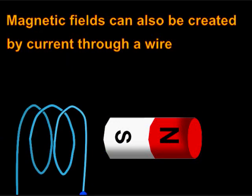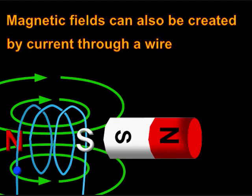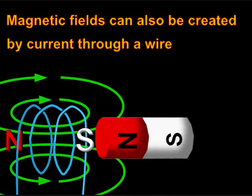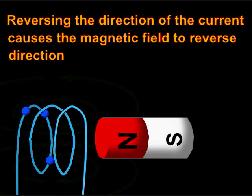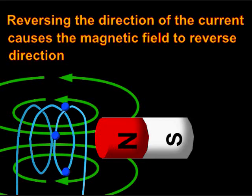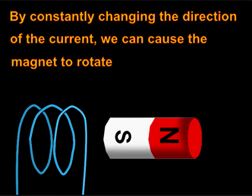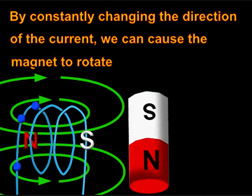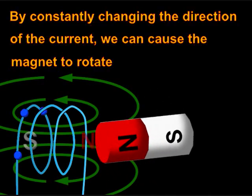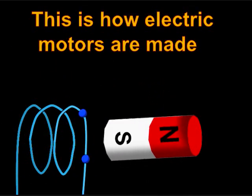Magnetic fields can also be created by current through a wire. Reversing the direction of the current causes the magnetic field to reverse direction. This allows us to cause the magnet to rotate. This is how electric motors are made.